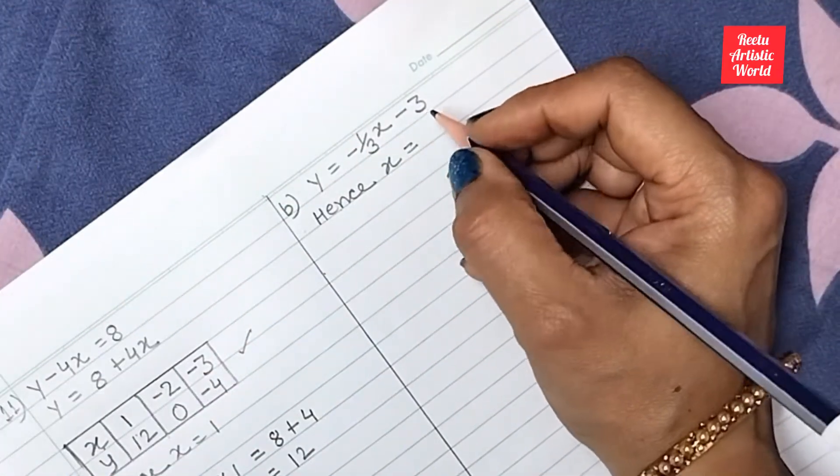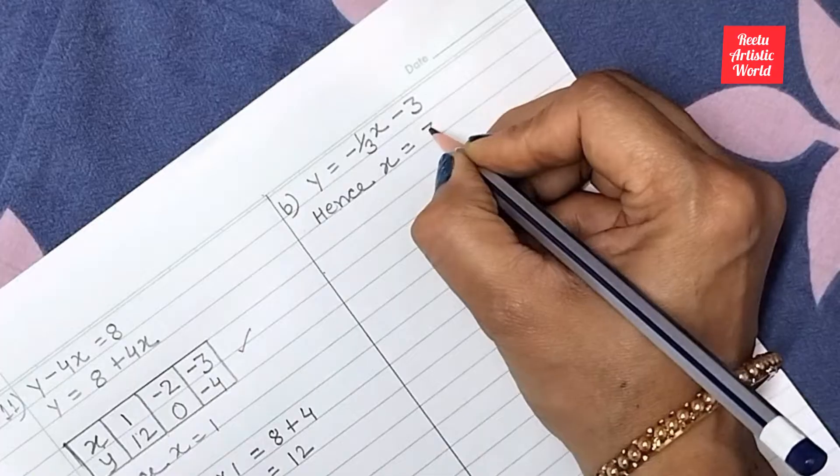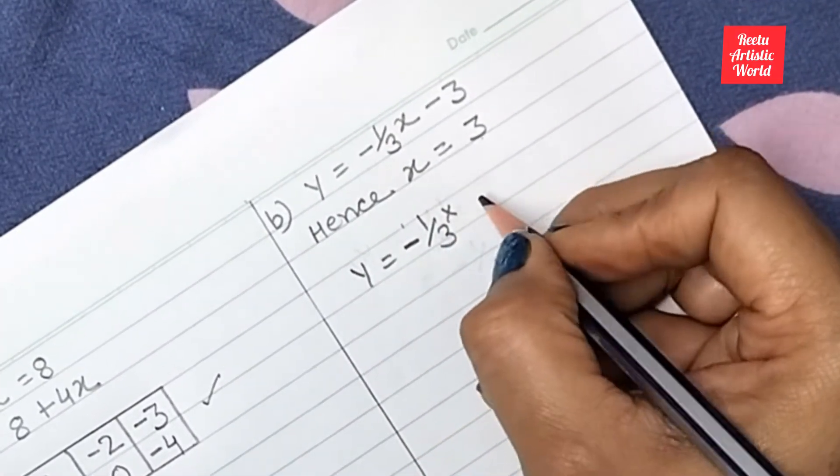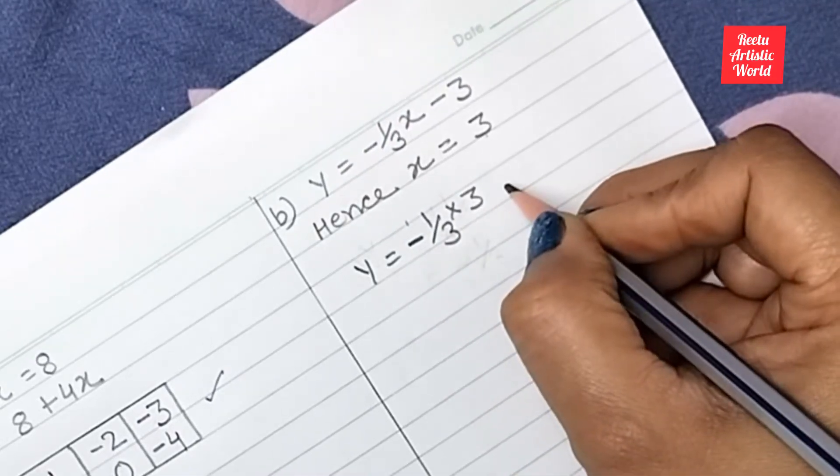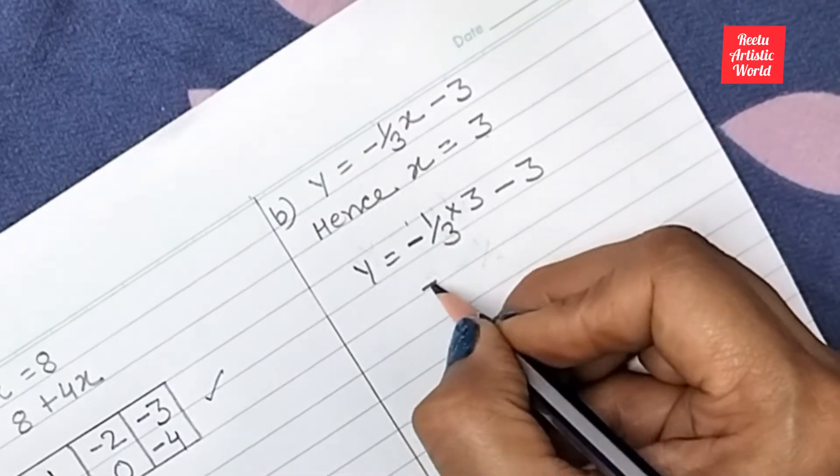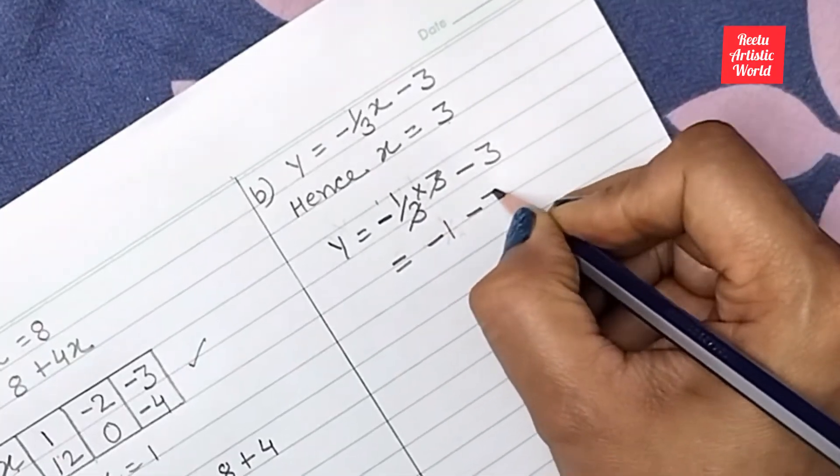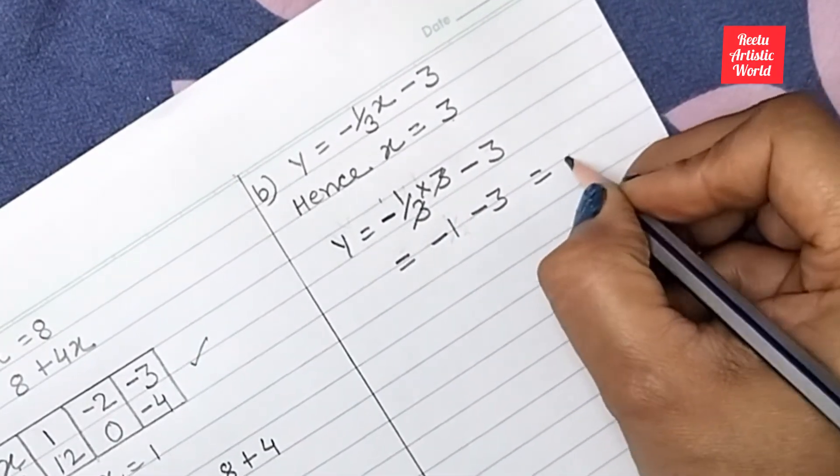In this equation I assume x is equal to 3, then y is equal to minus 1 by 3 into 3 minus 3, then 3 and 3 got cancelled. So minus 1 minus 3 is equal to minus 4.